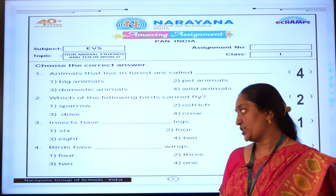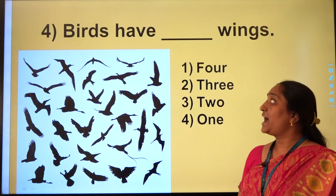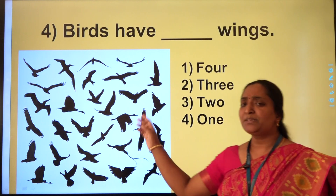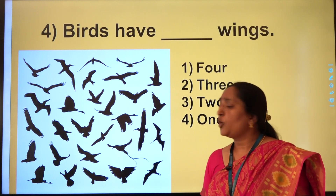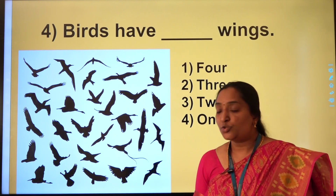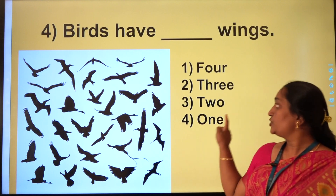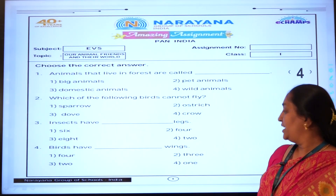Now the fourth question: birds have how many wings? You can see many birds over here, and all the birds have only 2 wings. So the correct option is option number 3.